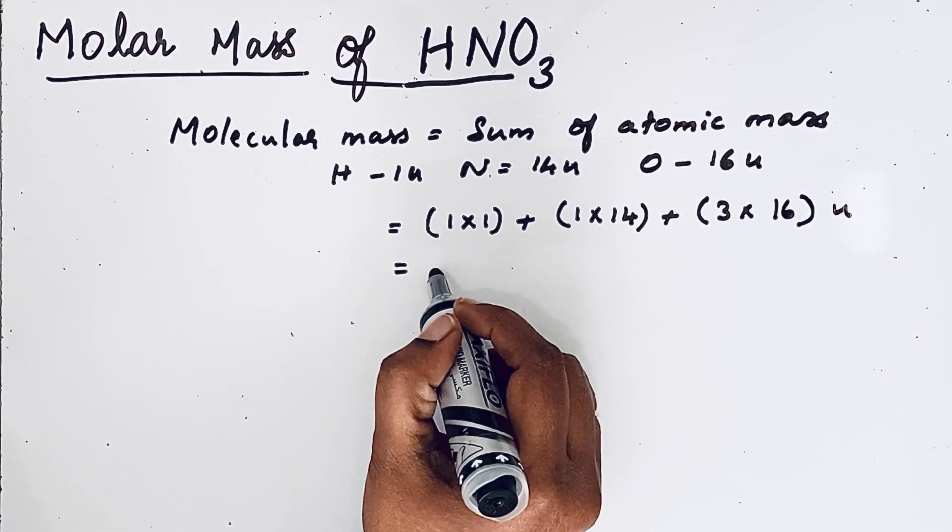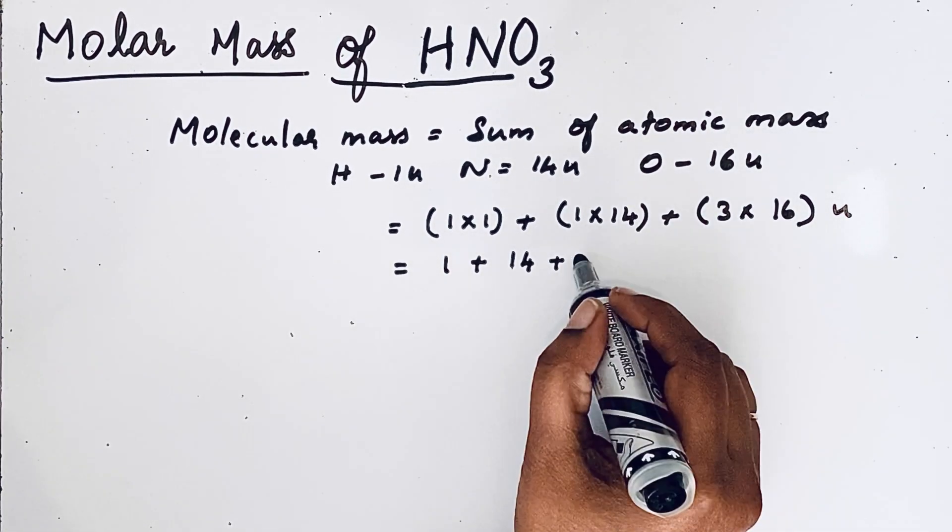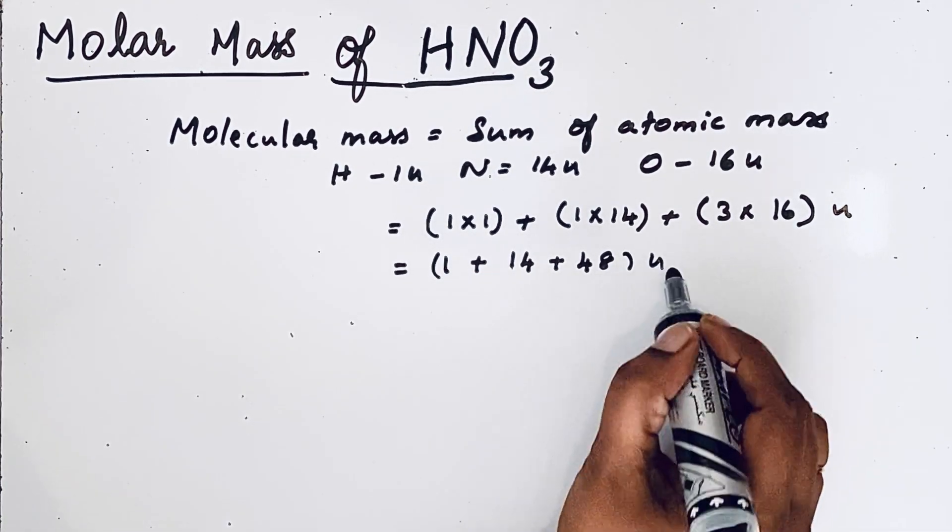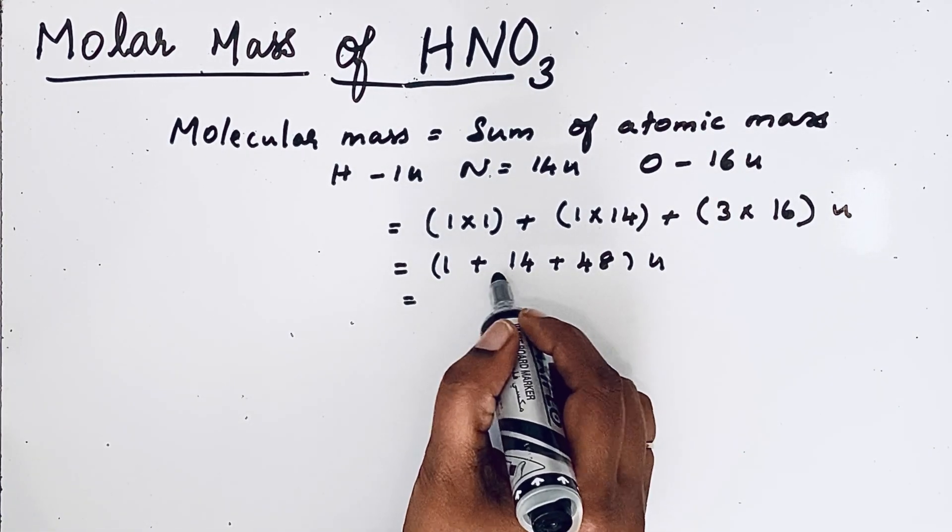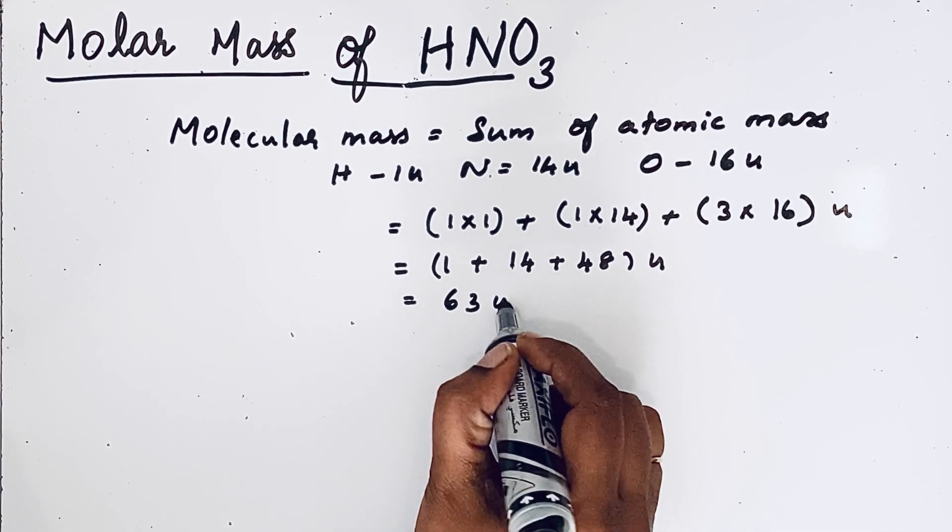So, 1 into 1, 1 plus 14 plus 3 into 16, 48U. If you add all together, 1 plus 14, 15, 15 plus 48, 63U.